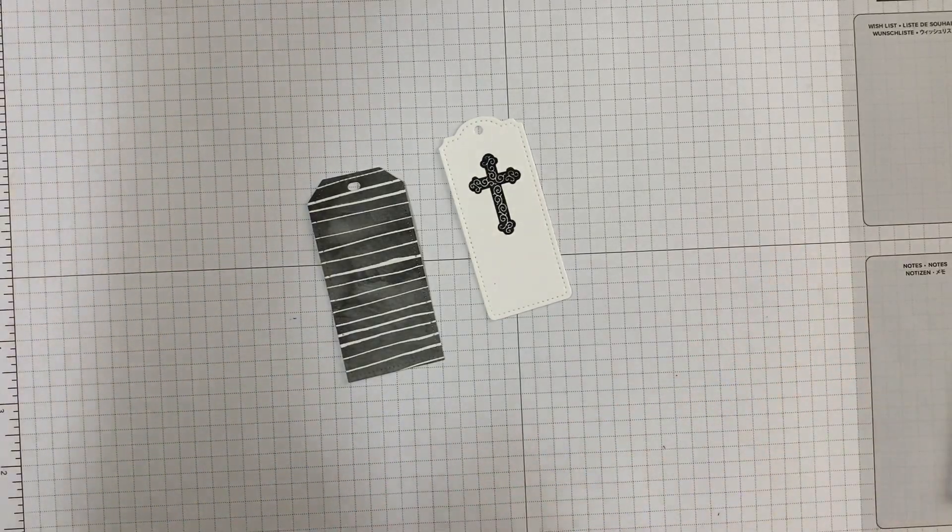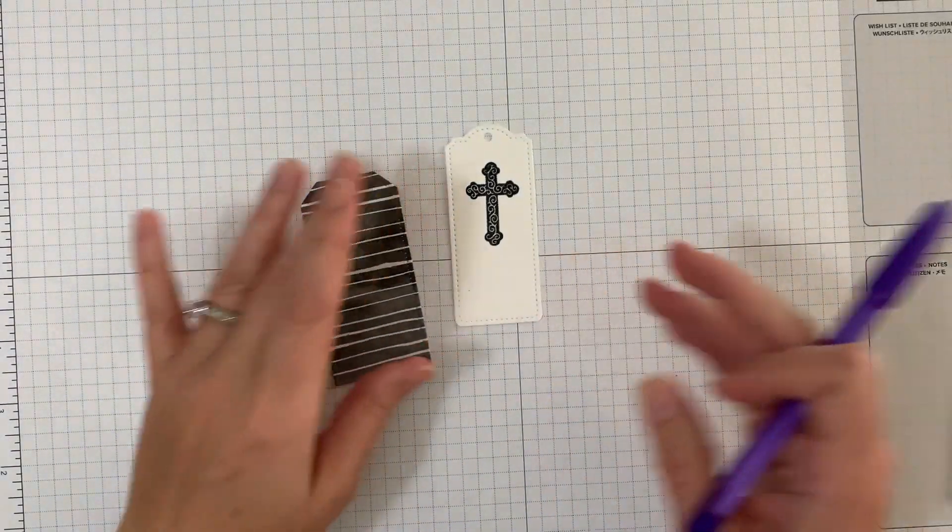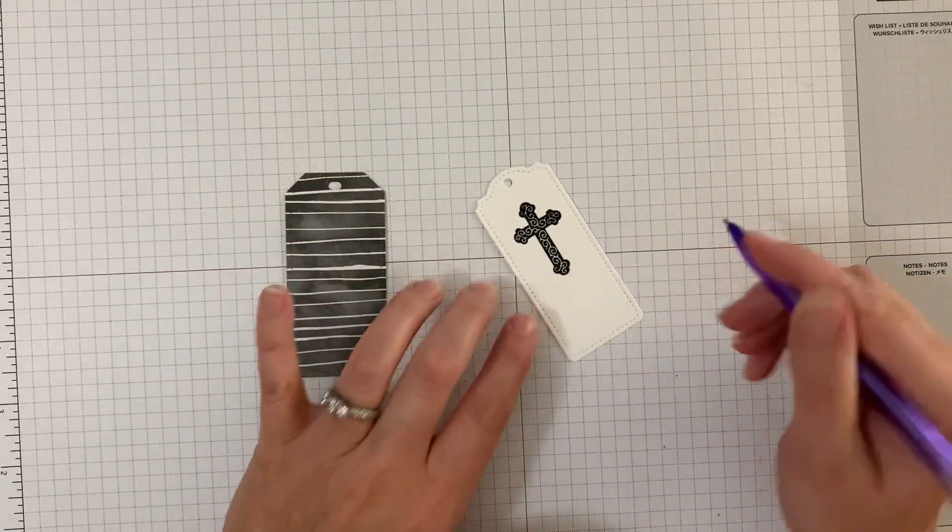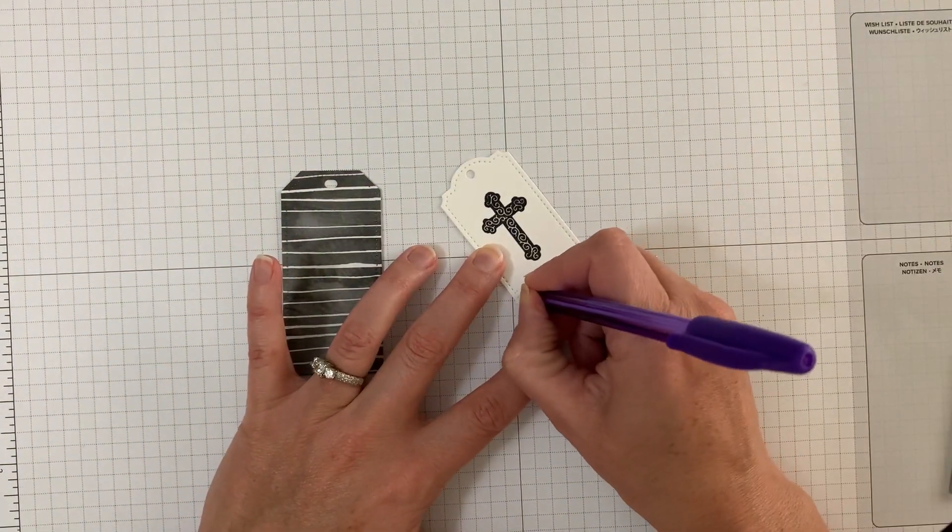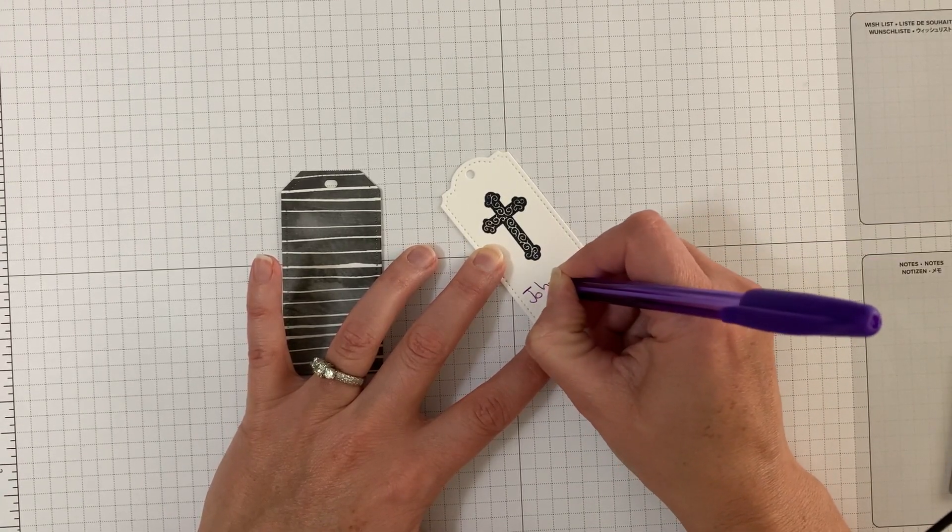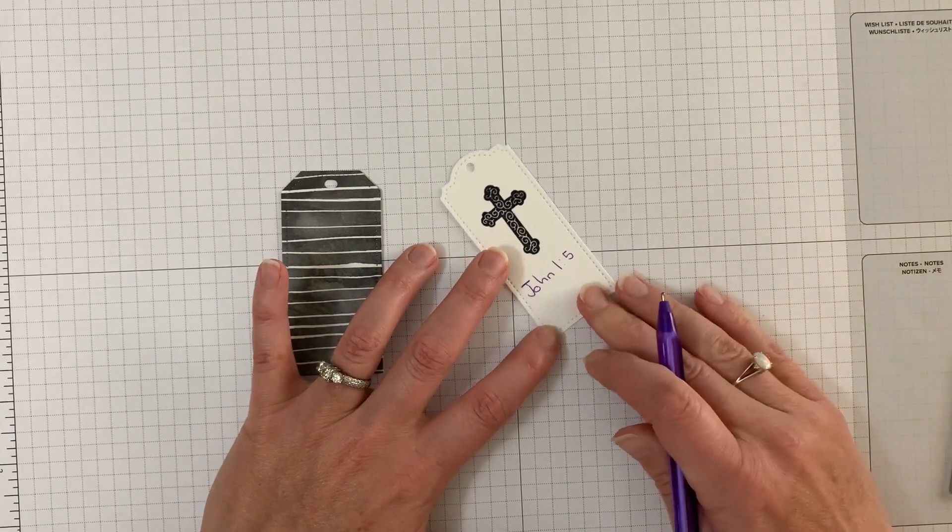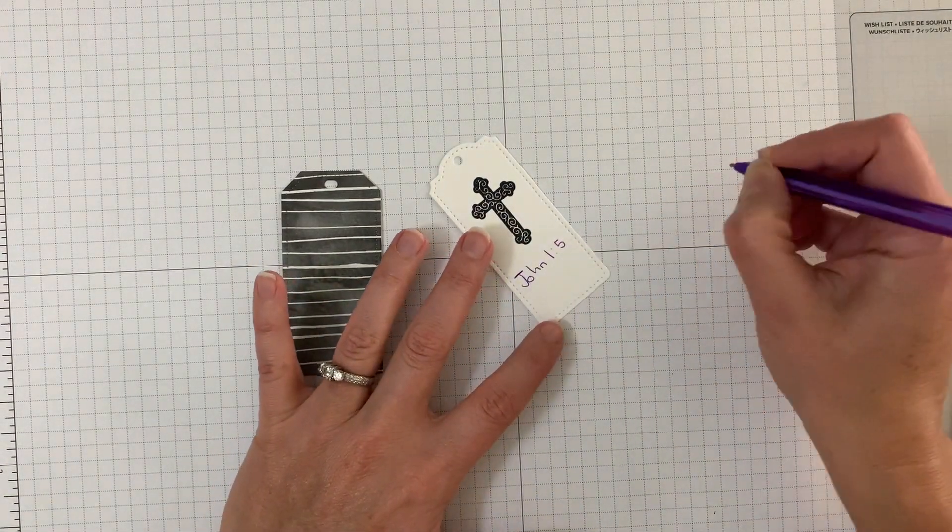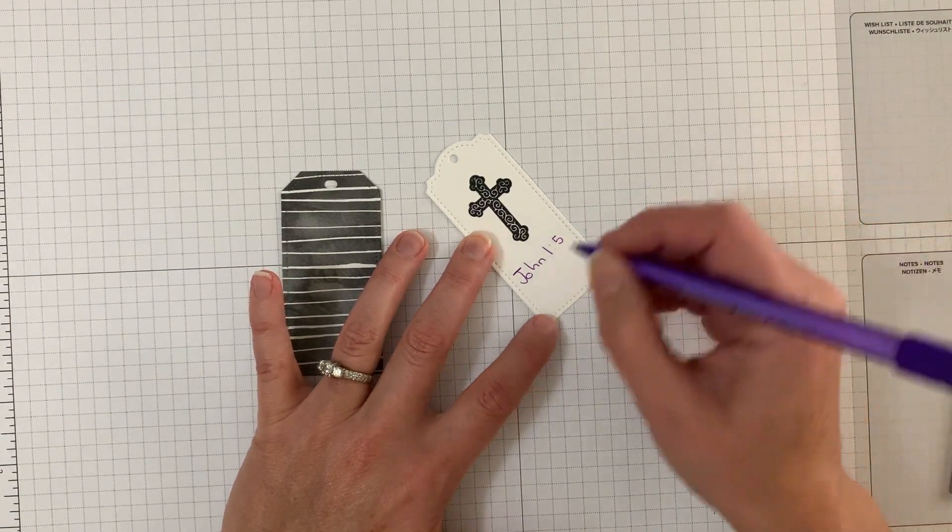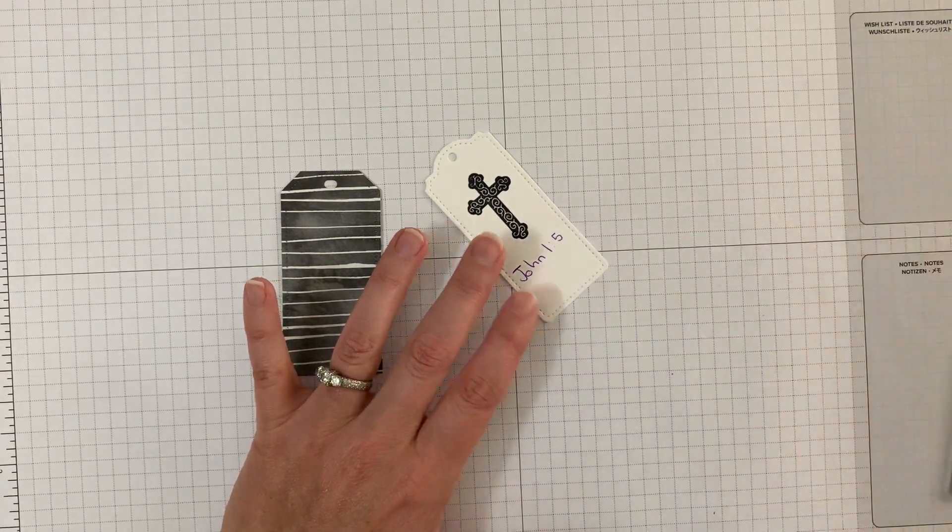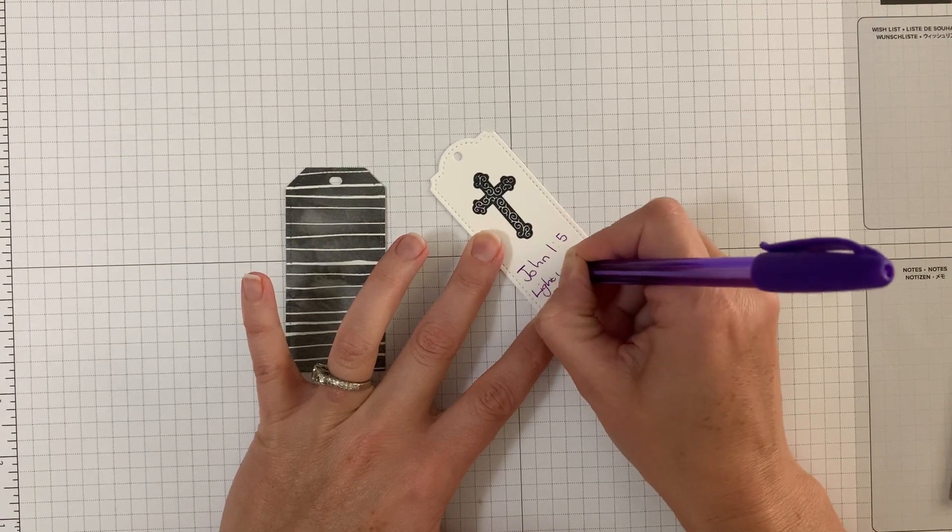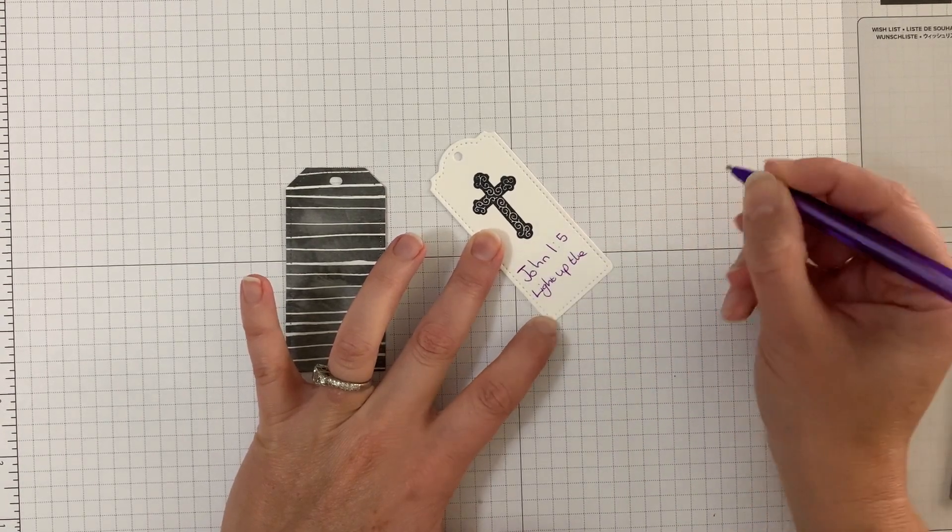So we had this, and then what I wrote on there, I just used a colored pen. We don't really have Bible verse stamps yet, but I just wrote it on here: John 1 verse 5, which is that the light shines in the darkness and the darkness cannot abide by it, I think if I remember correctly. But then to make it shorter, I just wrote 'light up the darkness.'